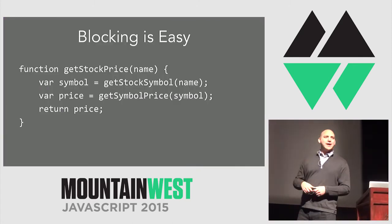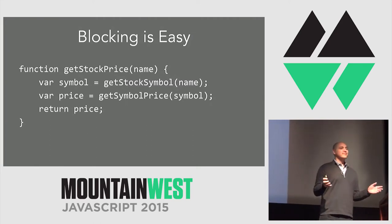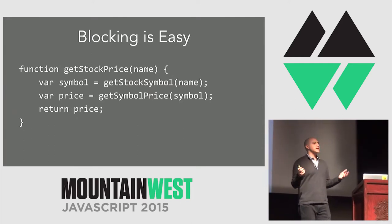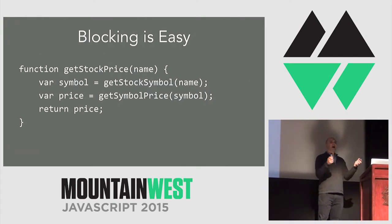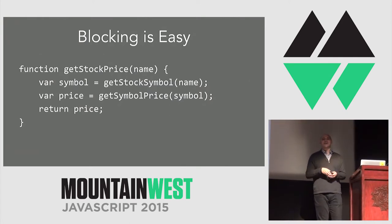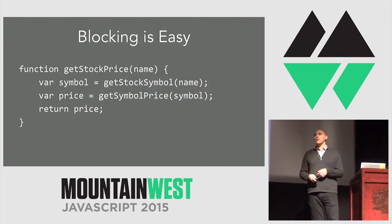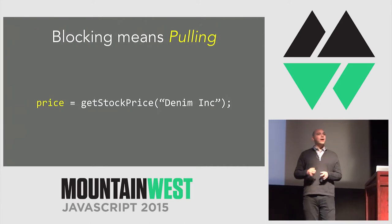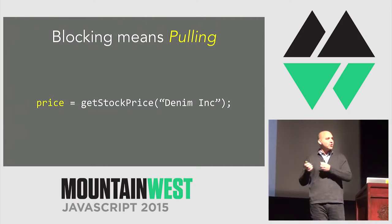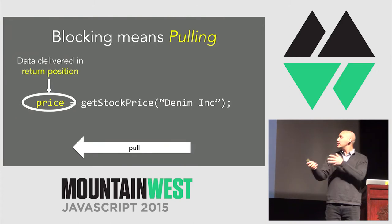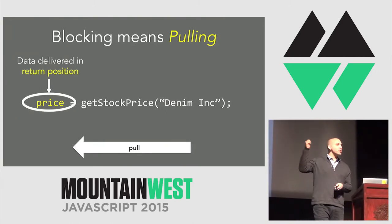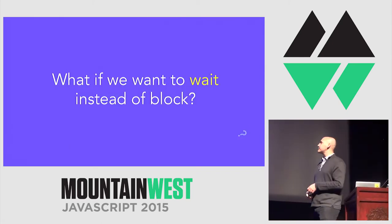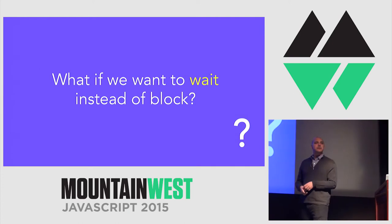We all know blocking, right? Blocking is easy. Imagine this example — getStockPriceSymbol and getStockPrice are both using a blocking XHR. Very easy to write this code, but terrible user experience because we can't accept user input while making these requests. From now on when I say blocking, think 'pulling.' We're pulling as a consumer — pulling the value out of the function in the return position. Data is delivered in the return position of the function.